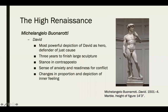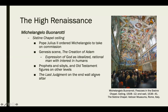Michelangelo's David is the most powerful depiction of David as the hero and defender of just cause. It is 14 feet tall — larger than life. It has a very idealized, almost too muscular body type. There are also some proportional exaggerations, like the oversized hands, which is symbolic — larger hands representing strength and power.